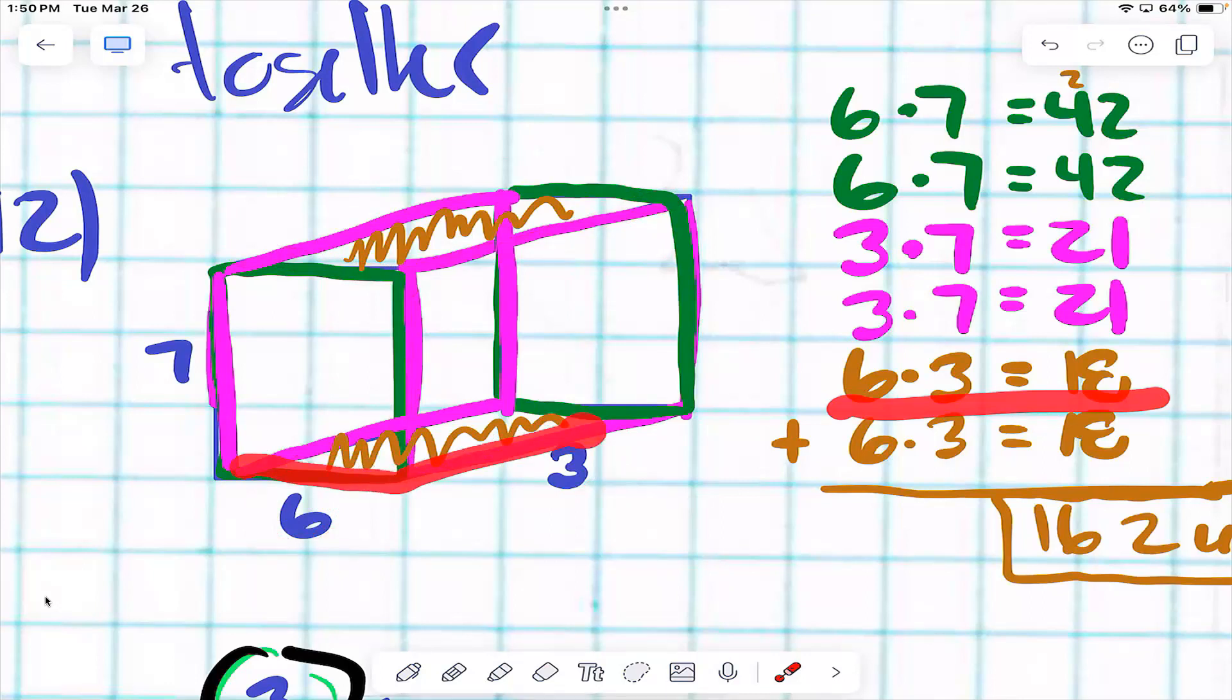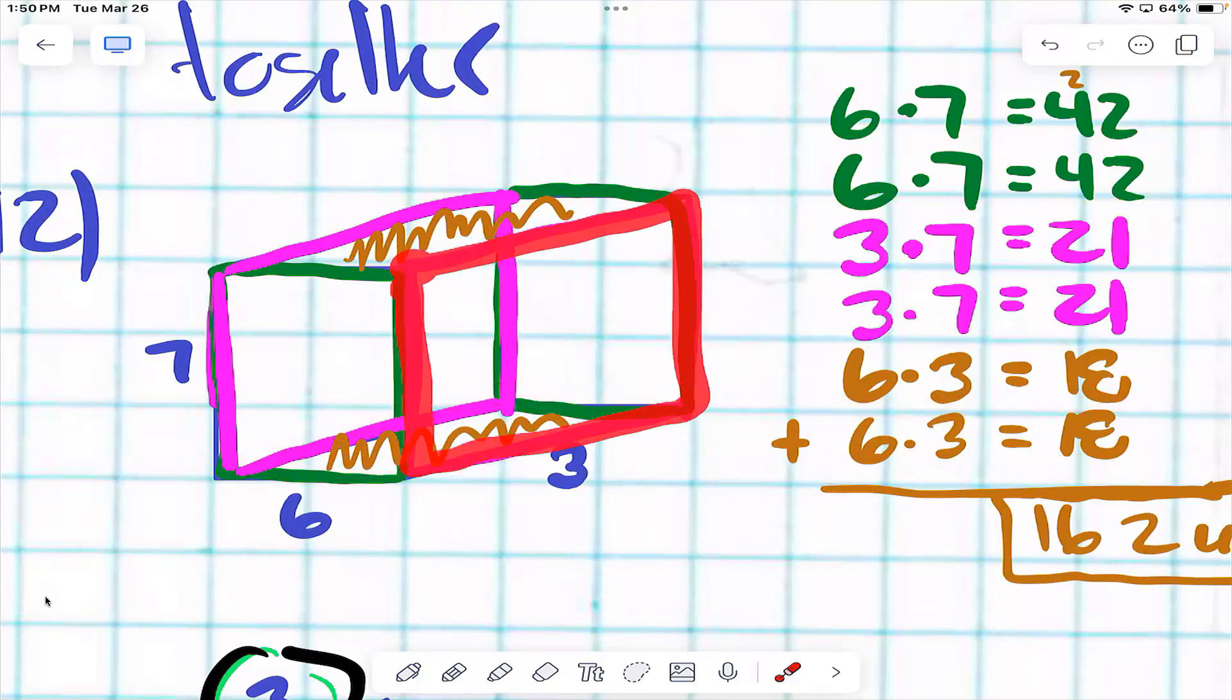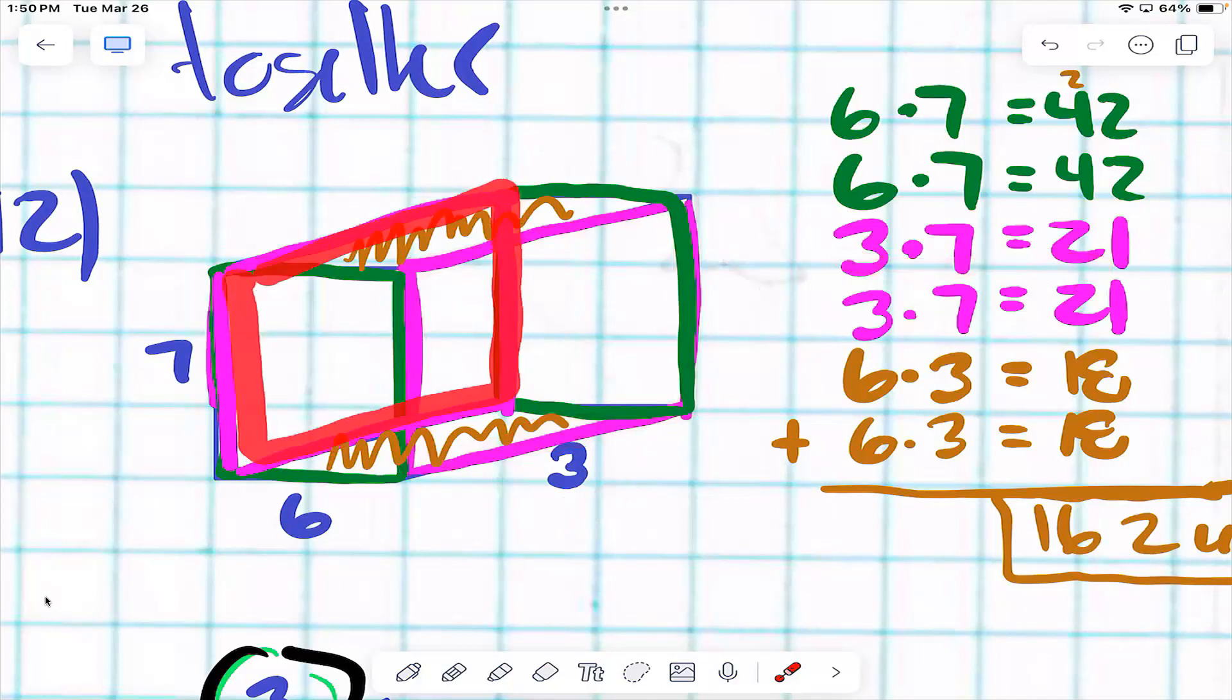And then down here, same idea. Three and six? Right there. So now we need to find this part. What are the dimensions of this part of the Kleenex box? Seven and three, which is right here. And then the back side would be the same, yes or no? Seven and three.